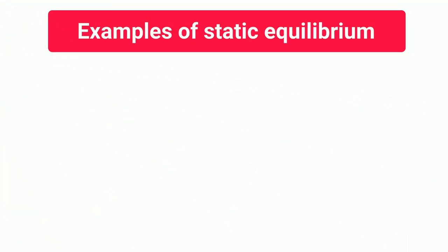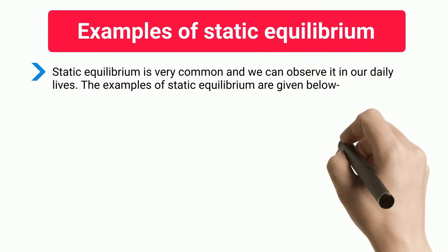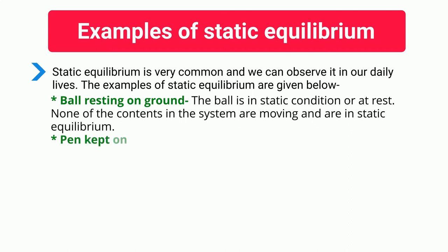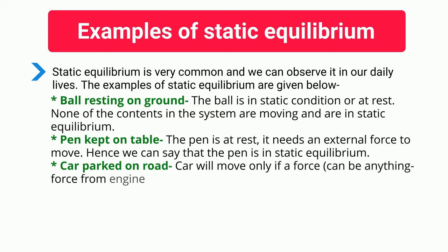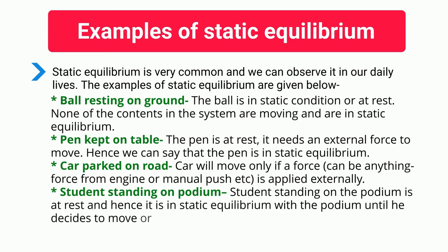Examples of Static Equilibrium: Static equilibrium is very common and we can observe it in our daily lives. Ball resting on ground: the ball is in static condition, or at rest; none of the contents in the system are moving. Pen kept on table: the pen is at rest and needs an external force to move, hence the pen is in static equilibrium. Car parked on road: the car will move only if a force — from an engine or a manual push — is applied externally. Student standing on a podium: the student is at rest and hence in static equilibrium with the podium until they decide to move or someone pushes or pulls them.